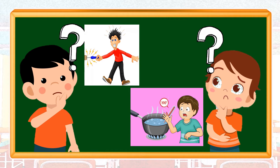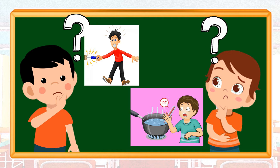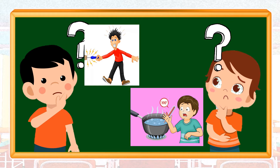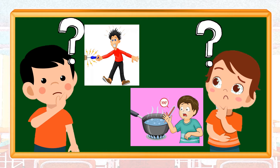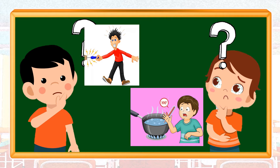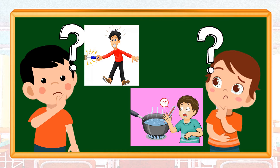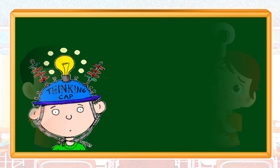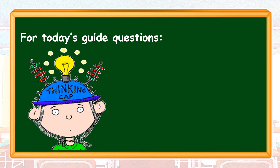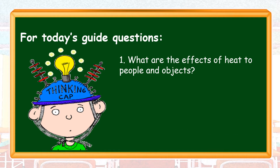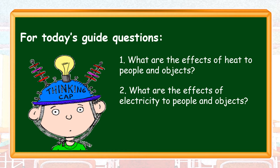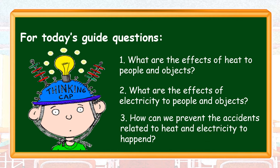What does the first picture show to us? How about the second picture? Have you ever experienced one of the two scenarios presented? What did you do? How can we prevent these things from happening to us? For today's guide questions: Number 1, what are the effects of heat to people and objects? Number 2, what are the effects of electricity to people and objects? And number 3, how can we prevent the accidents related to heat and electricity from happening?